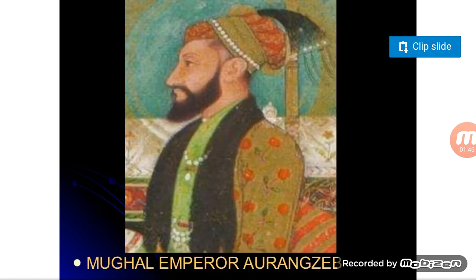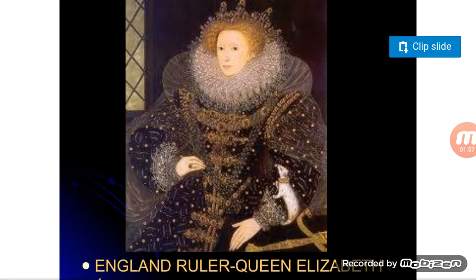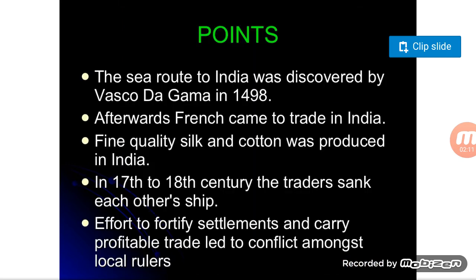You can see the painting of Mughal Emperor Aurangzeb, and here is Bahadur Shah Zafar at the edge. This is England's Queen Elizabeth, from whom the British acquired the charter to trade in India. Now let's look at the next points.